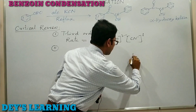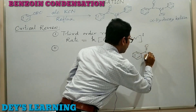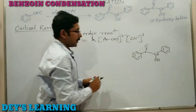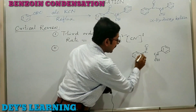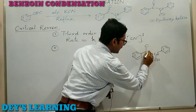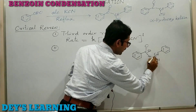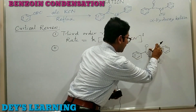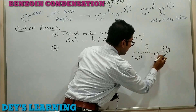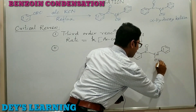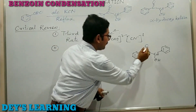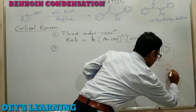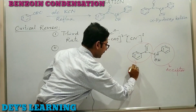Number two: looking at the benzoin molecule carefully, one part of the molecule — where the carbanion forms with CN⁻ — acts as the donor part, while the other part, where the second benzaldehyde is attacked, acts as the acceptor part.